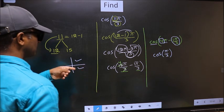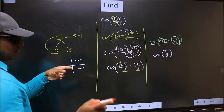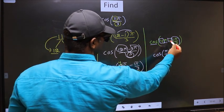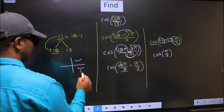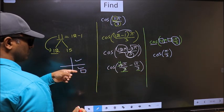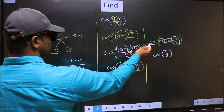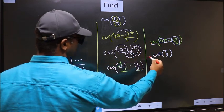So now to check which quadrant does it lie, we should look at this symbol. Here we have negative. That means the angle lies in the fourth quadrant. And in the fourth quadrant, cos is positive. So we should put plus.